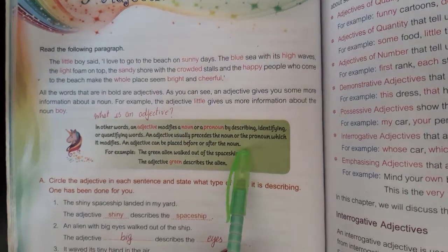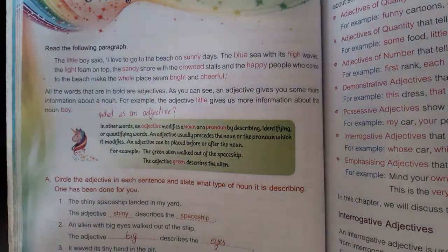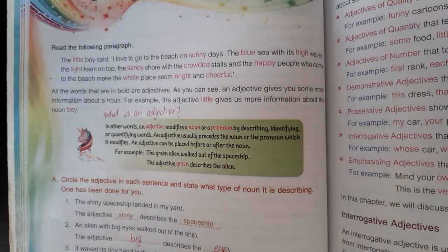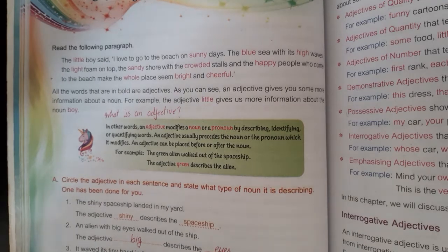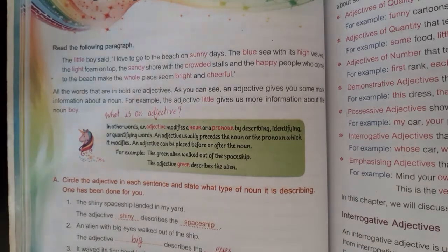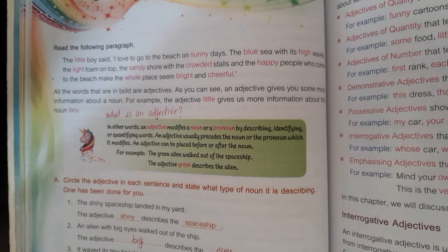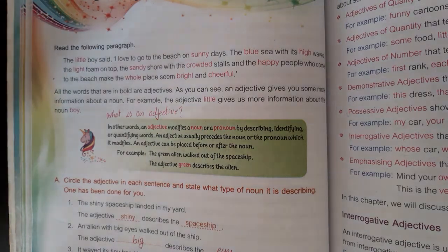Adjective kya hota hai? Adjective ek aisa word hota hai jo noun ya pronoun ko describe karta hai. Aur zyada tar noun ya pronoun ke aage hi use hota hai. Jaise: beautiful eyes, tiny hand.